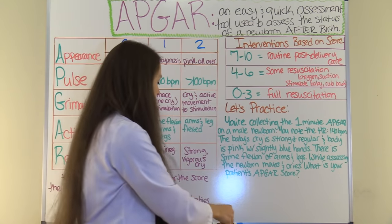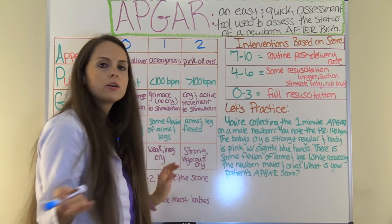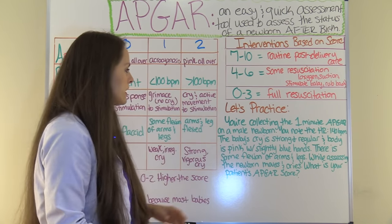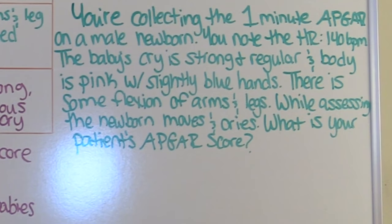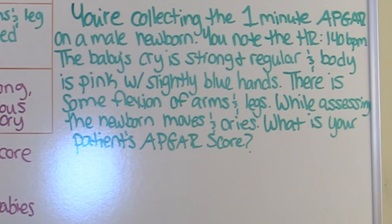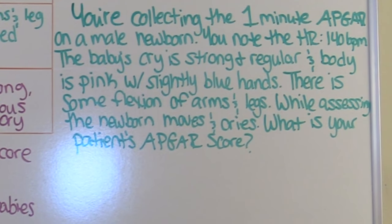Let's look at a typical scenario you may encounter on an exam. You're collecting the one-minute APGAR on a newborn male. You note the heart rate is 140 beats per minute, the baby's cry is strong and regular, and the body is pink with slightly blue hands. There is some flexion of arms and legs. While assessing the newborn, it moves and cries. What is the patient's APGAR score?